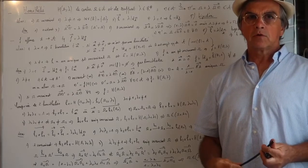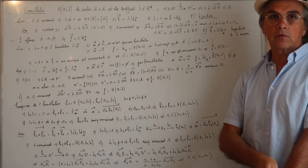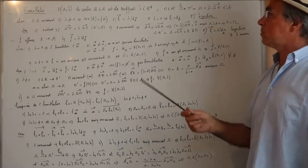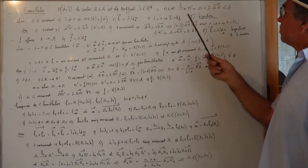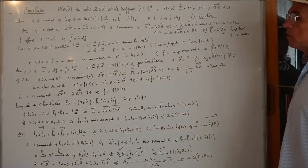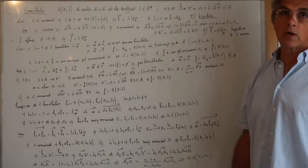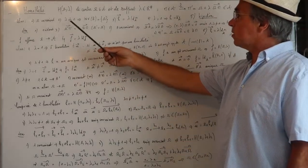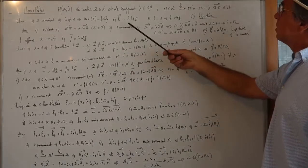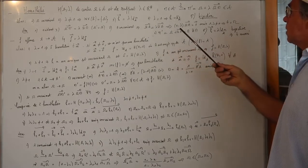Nous voyons maintenant des applications affines très importantes : les homothéties. On se donne un point Ω et un rapport λ réel non nul. On appelle homothétie de centre Ω et de rapport λ l'application qui à tout point M associe M' = Ω + λ·ΩM, définie par la relation vecteur ΩM' = λ·vecteur ΩM. Ω est invariant. Si λ est différent de 1, c'est le seul point invariant. La partie linéaire de H est λ·Id. Si λ = 1, H est l'identité. Et H est toujours bijective.